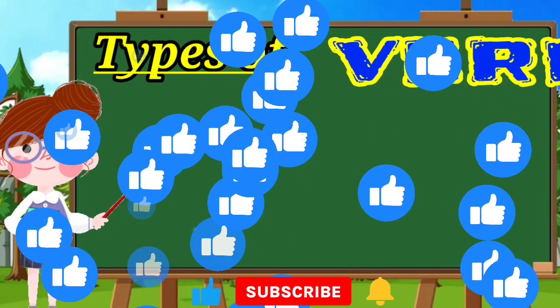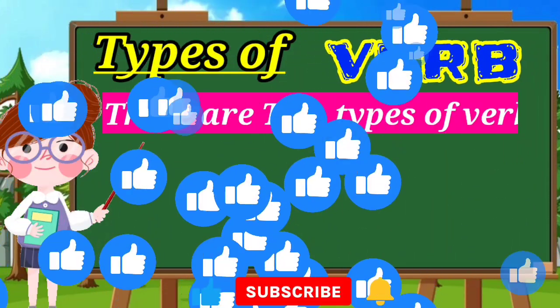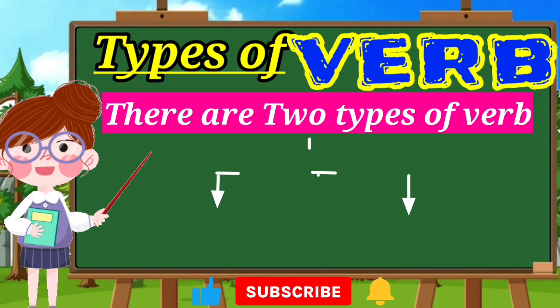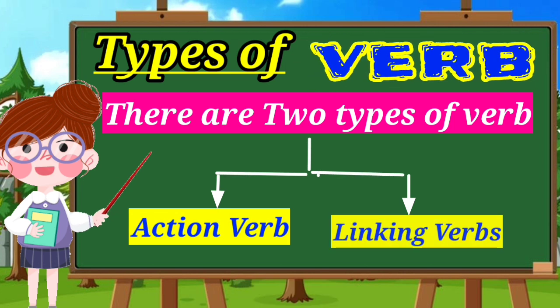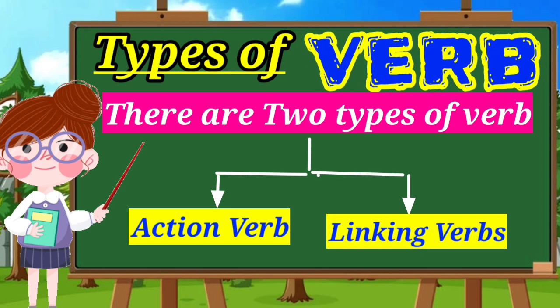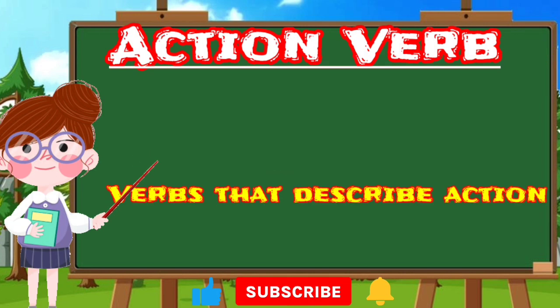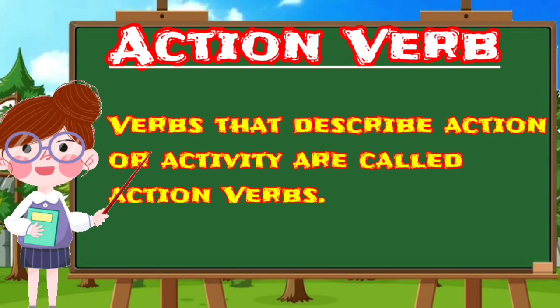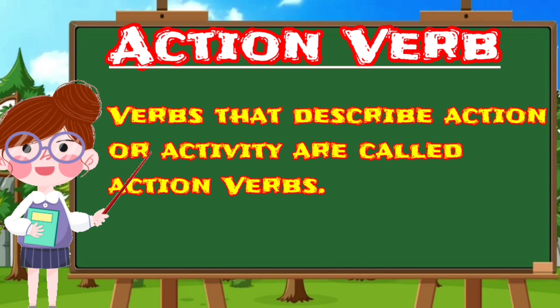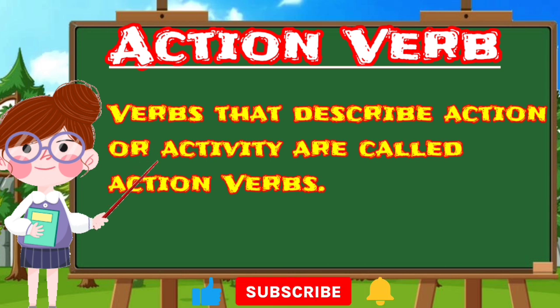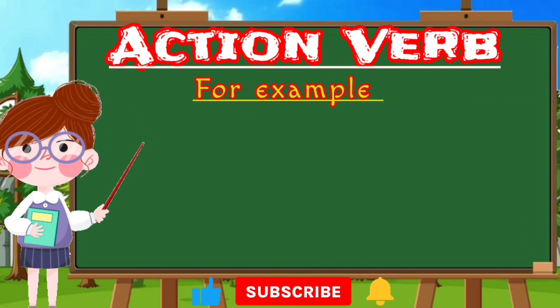There are two types of verb: action verb and linking verb. Verbs that describe actions or activities are called action verbs.